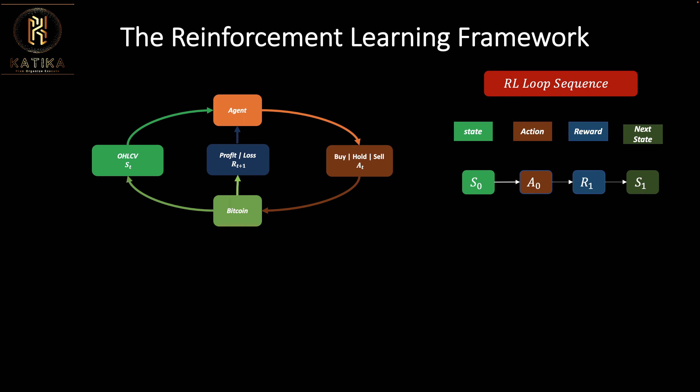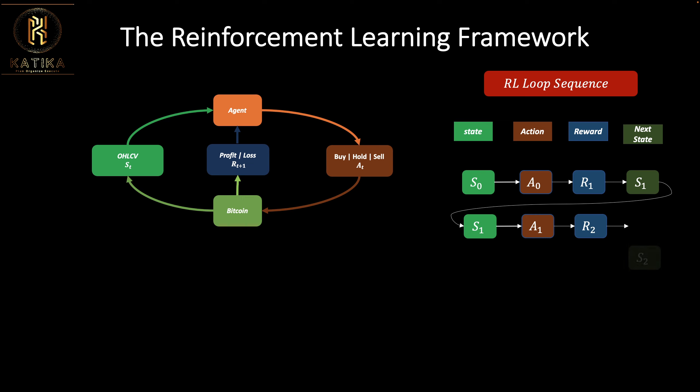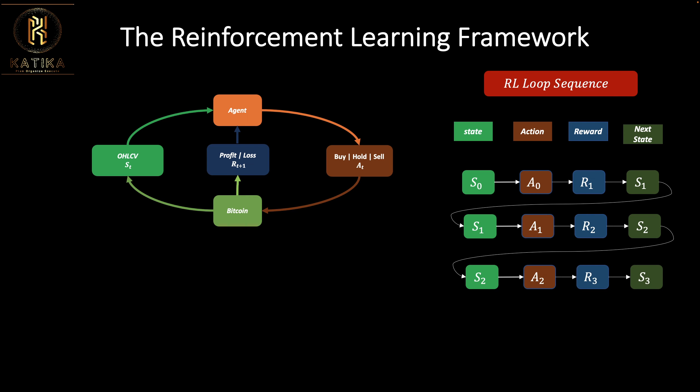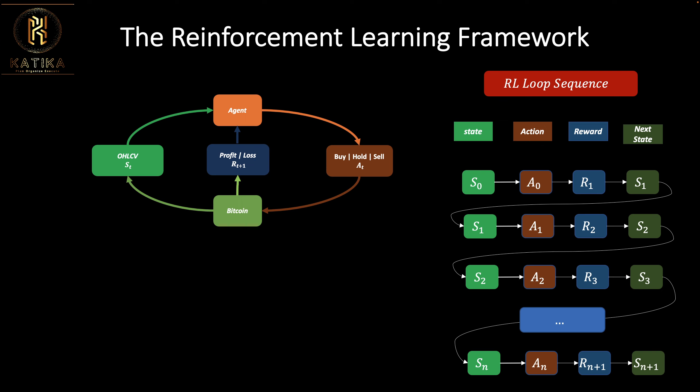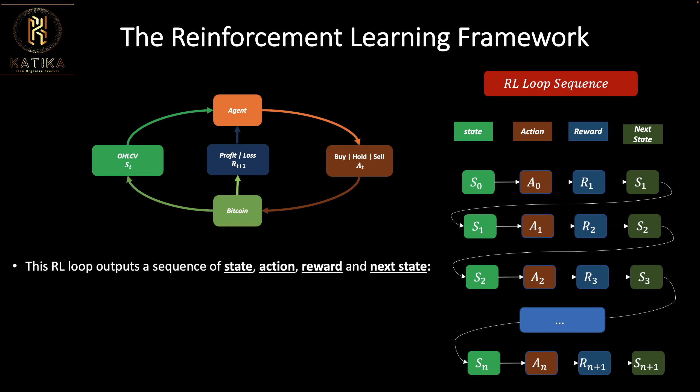When you move to state s1, that state is shown to the agent, the agent takes another action based on that state, it gets a reward based on that action, and then moves to another state. This process continues until we reach the terminal state, which is the last day. For example, if you're trading on a monthly basis, your terminal state is the last day of the month. The reinforcement learning loop outputs: state, action, reward, and the next state.